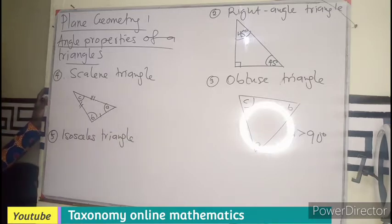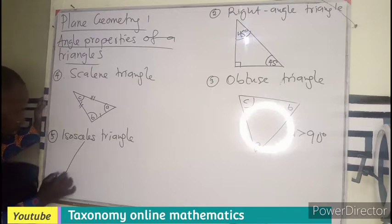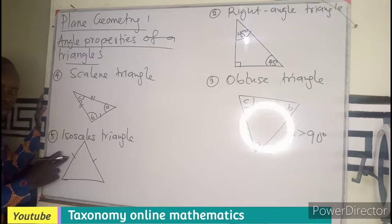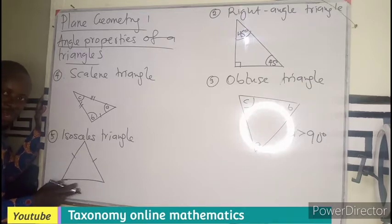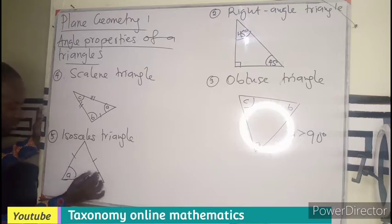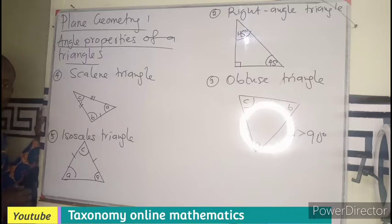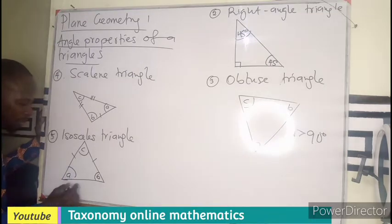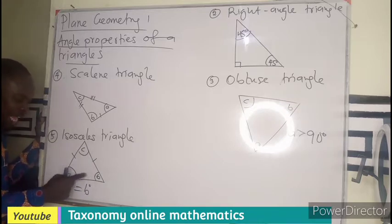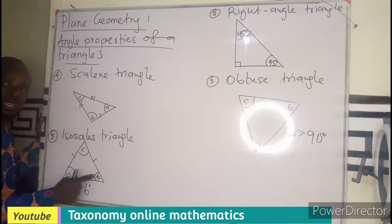Then we have an isosceles triangle, which is a triangle that has two of its sides equal. If two sides are equal, the base angles will also be equal. So if this side equals this side, then angle A is equal to angle B in an isosceles triangle.